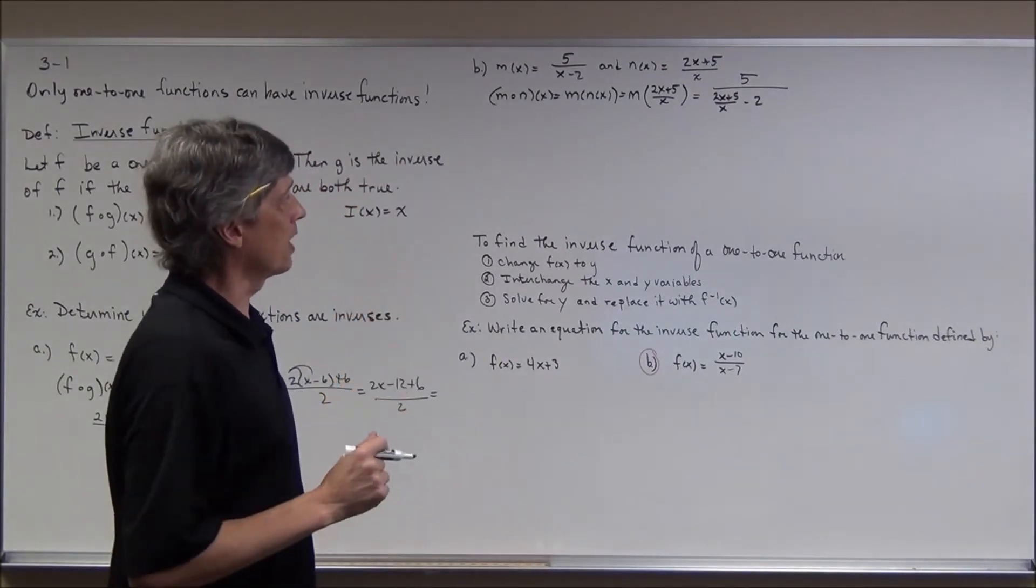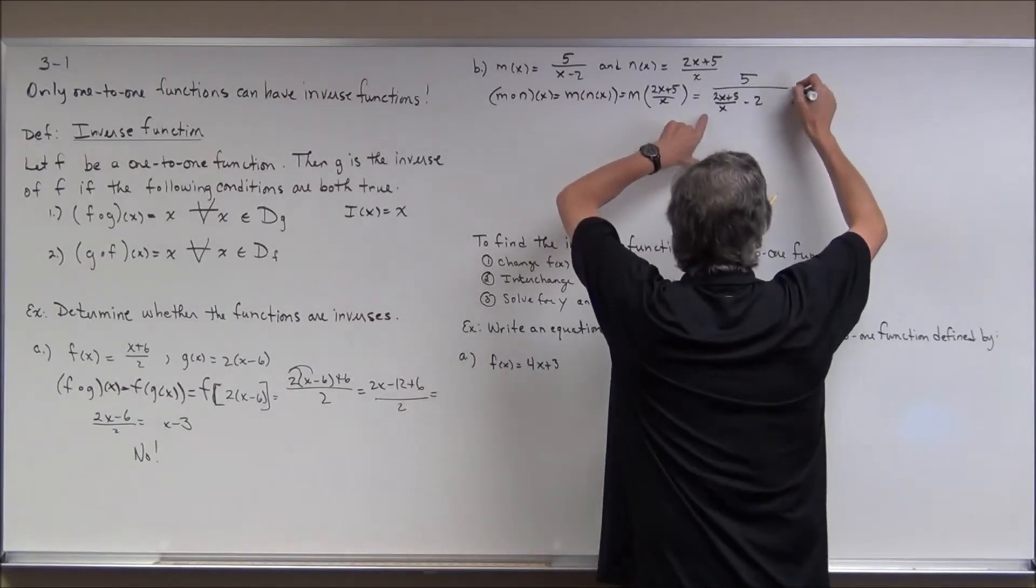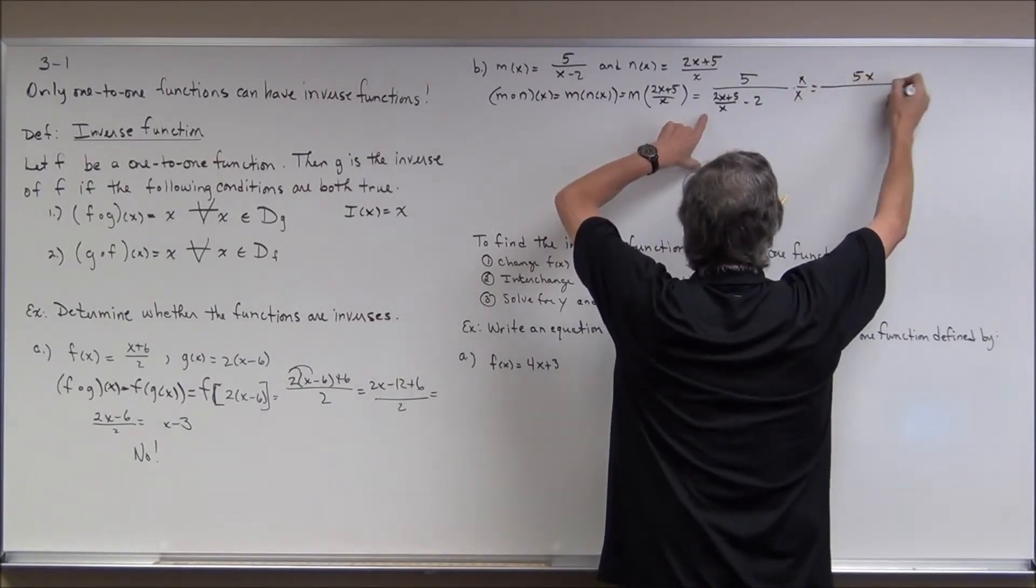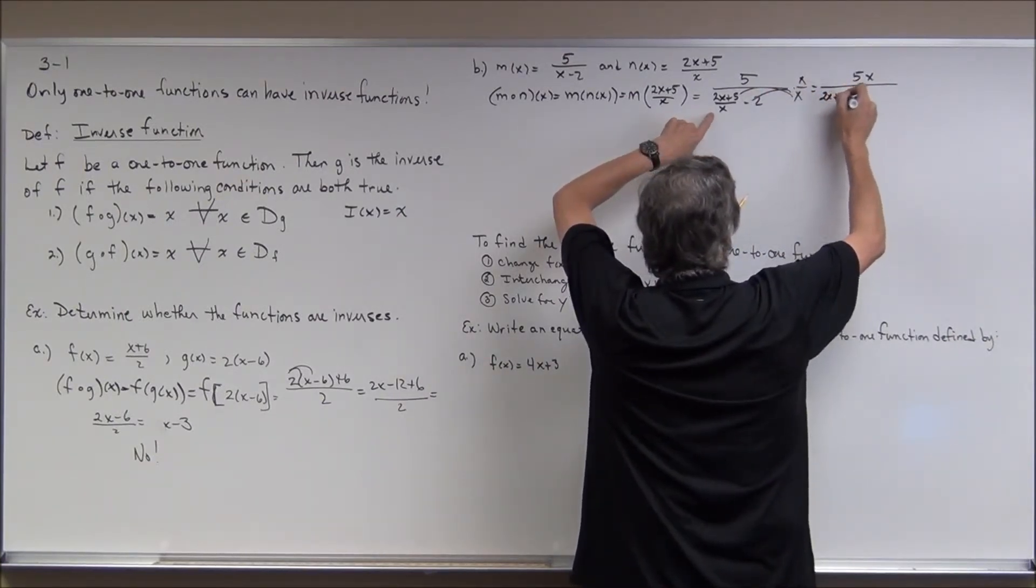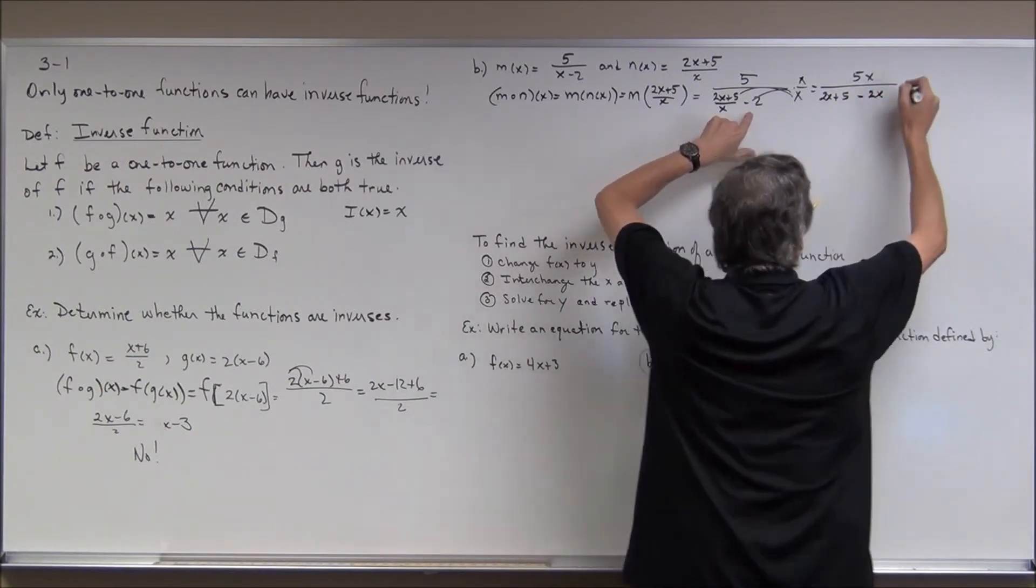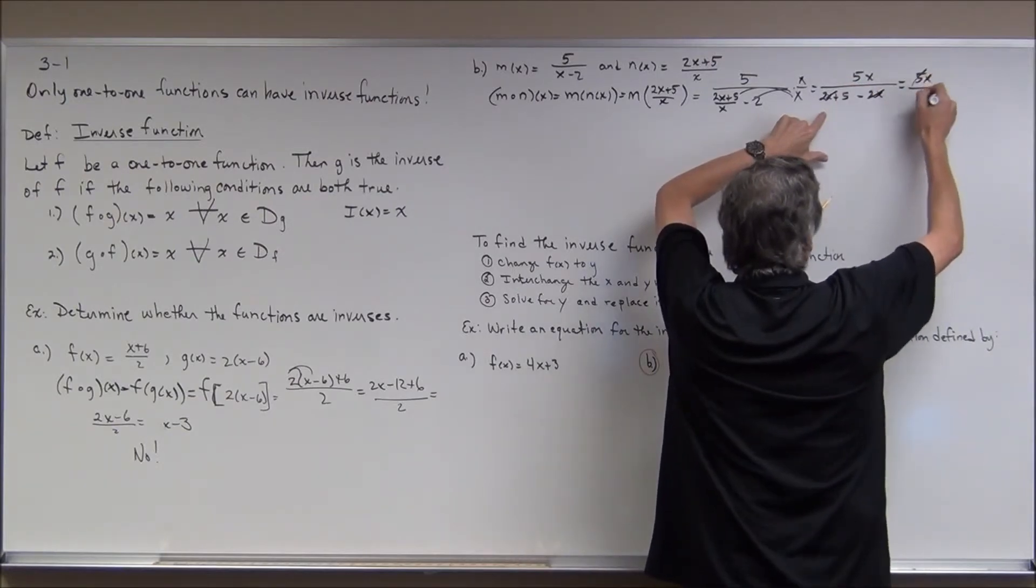I'm going to multiply top and bottom by x to get rid of the complex rational expression here. So top and bottom by x gives me 5x all over. Now here I'm going to have to distribute so that it would be 2x plus 5 minus 2x. So this is going to be 5x on top and these are going to cancel. So that's just going to give me 5. Look at this. I get the identity.